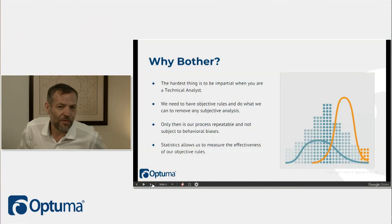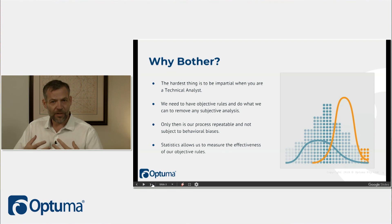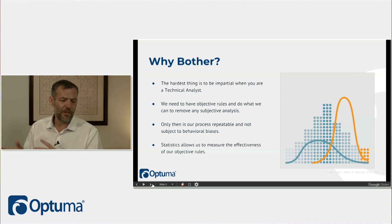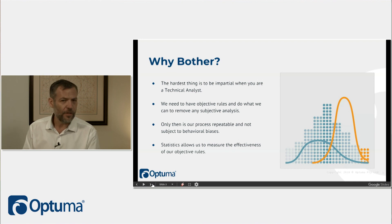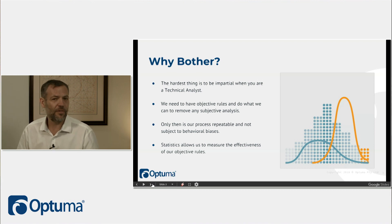So, number one question: why bother? When we deal with returns and system testing, the whole point behind statistics is that we want to observe something, measure it, describe it, and then be able to compare it — is this strategy better than that strategy? The way we do that is with statistics, and it means we can be impartial — we don't have cognitive biases getting in our way. We focus on objective rules; we can't have subjective analysis in this type of statistical work.